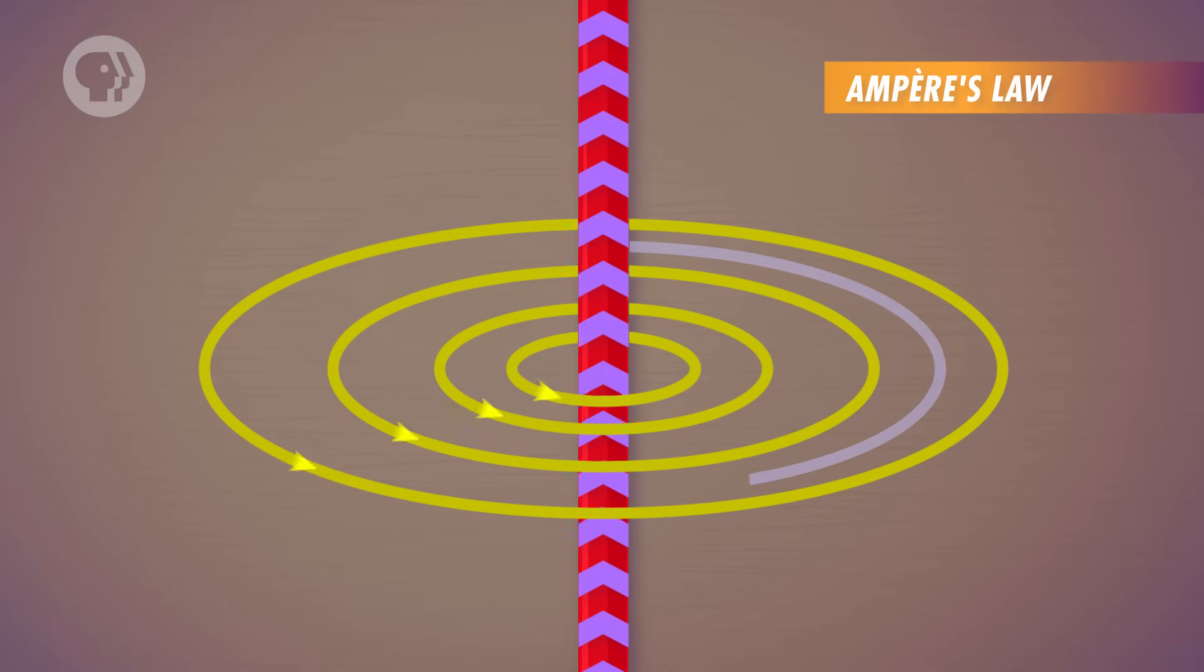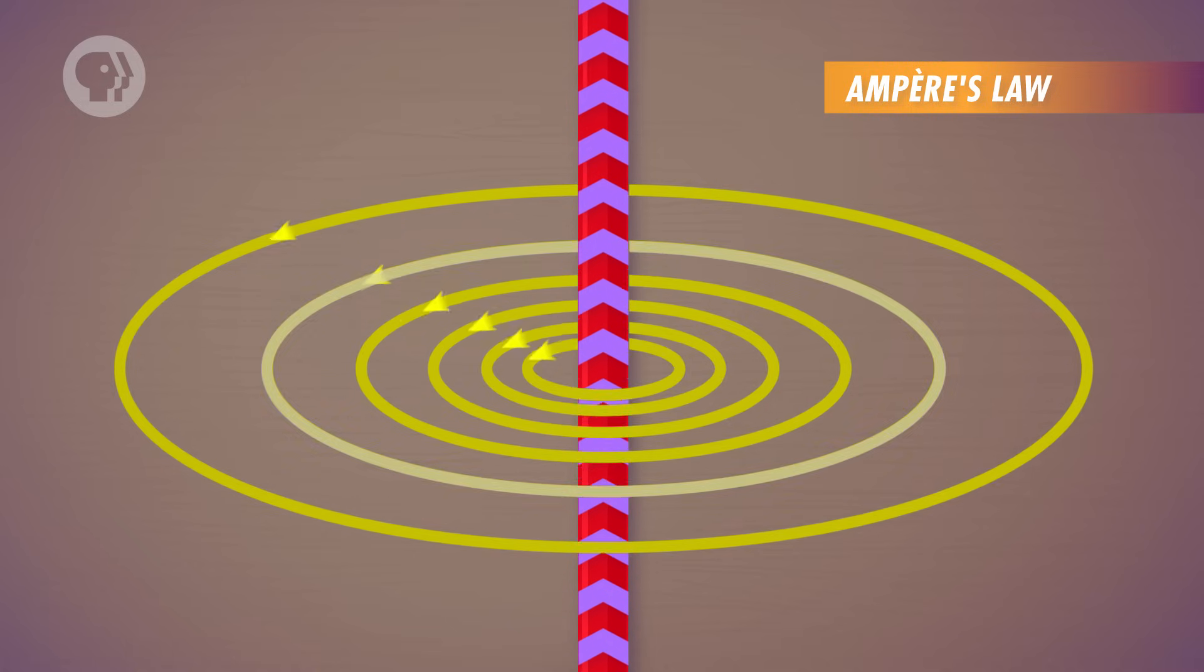If you draw a circle that's, say, a centimeter from the wire, the magnetic field along the circle will have a set strength. Ampère realized that the stronger the current is that's running through the wire, the stronger the magnetic field would be along that circle. That's the basic logic behind Ampère's law.